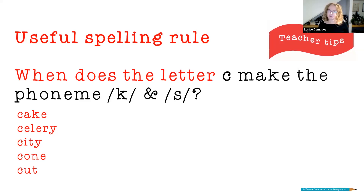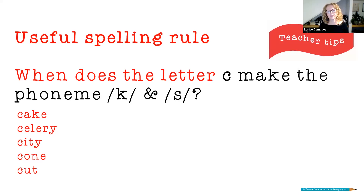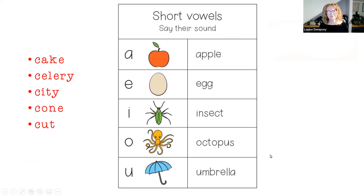So below is a list of words. I always use investigation with kids, trying to get them really curious about words and develop that word consciousness. You might want to give the kids a set of words like this and see if they can work out why the C is making a K sound in words like 'cat,' 'cone,' and 'cut,' but making an S sound with 'celery' and 'city.' So pause the video and see if you can work out what the rule might be.